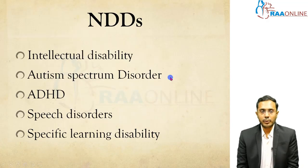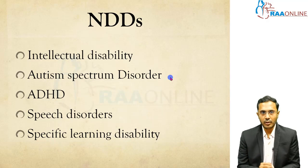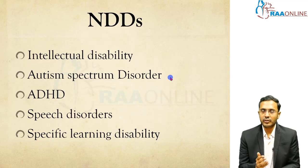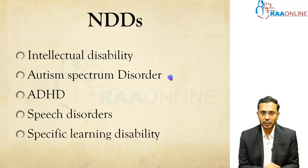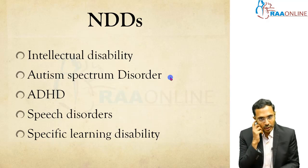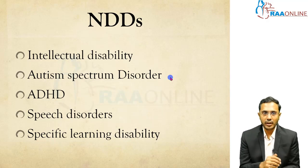Basically, what is NDD — Neurodevelopmental Disorder? Autism is one of the neurodevelopmental disorders. What are all the other neurodevelopmental disorders? Intellectual disability, Autism Spectrum Disorder, ADHD — Attention Deficit Hyperactivity Disorder, Speech Disorder, Specific Learning Disability — what we usually call Dyslexia. These are examples of neurodevelopmental disorders.